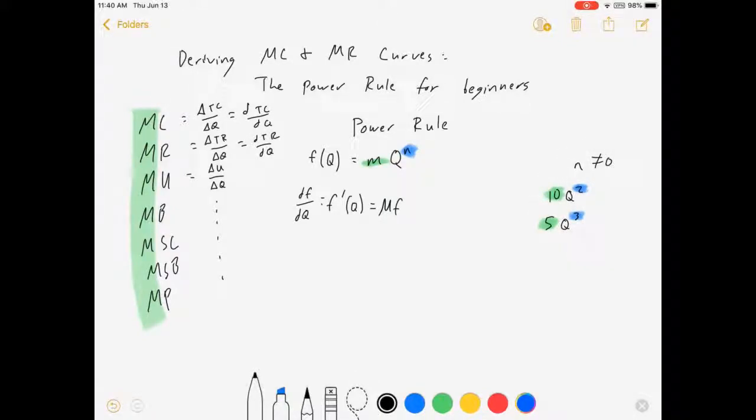Marginal utility or marginal cost, that f is some piece of something. Marginal function of q, if f equals mq to the n, is equal to this: n times m times q to the n minus 1. So what I did, I brought this n down and multiplied it out front, and then I subtracted one from it. That's all. That's the power rule. Multiply the front by the exponent, and then take one from the exponent.